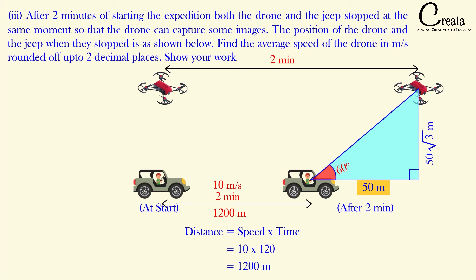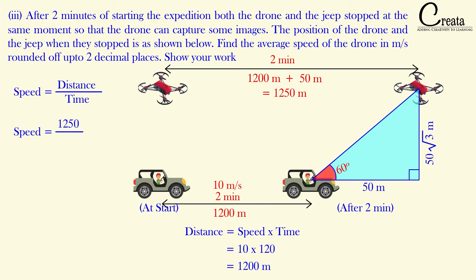After starting the expedition, the Jeep has traveled for 2 minutes at 10 m/s, so distance = 10 × 120 = 1200 meters. The drone has traveled 1200 + 50 = 1250 meters. Speed of drone = 1250 / 120 = 10.42 meters per second. The speed of the Jeep is 10 m/s and the speed of the drone is 10.42 m/s — slightly faster, which is why the drone crossed 50 meters extra compared to the Jeep.